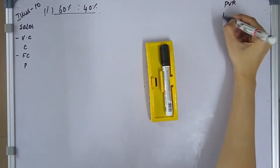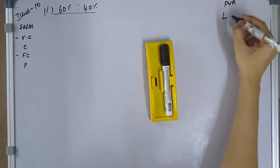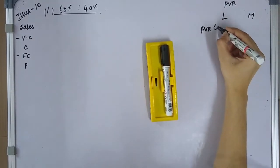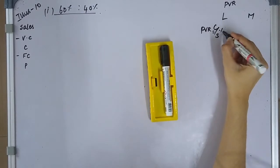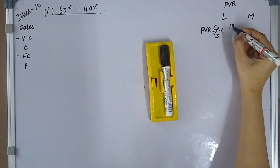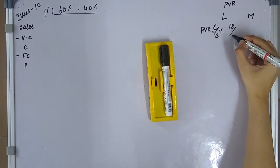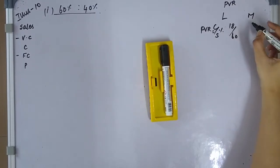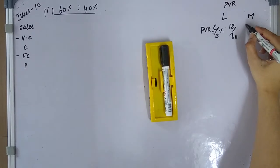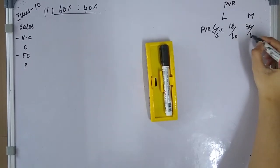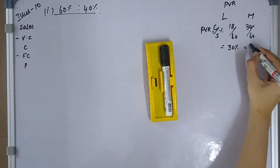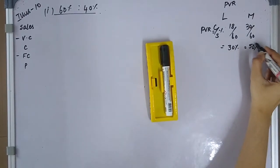PVR for L and M: contribution divided by sales. Contribution for L is 18,000 and sales is 60,000. For M, contribution is 30,000 and sales is 60,000. PVR for L is 30% and PVR for M is 50%.